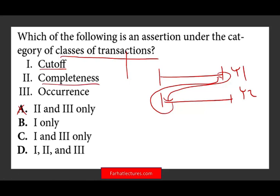Completeness — what is completeness? Completeness means that all transactions and events have been recorded. Here you are dealing with understatement: did you record everything? You did not keep any expense out; you did not keep any revenue out. This is completeness. Completeness is an assertion that deals with transactions, so two is in. Now we have one and two. Once you get to this point, you know the answer must be one, two, and three, because one and two are in letter D.